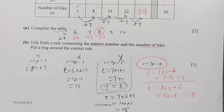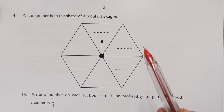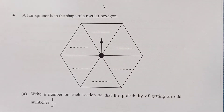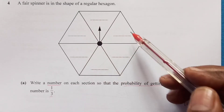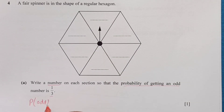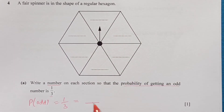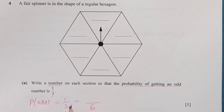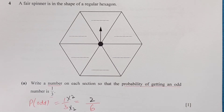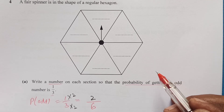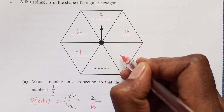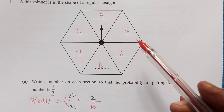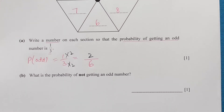Question four: a fair spinner is in the shape of a regular hexagon. Write a number on each section so that the probability of getting an odd number is one-third. We have six sections, so probability of one-third means two out of six sections should have odd numbers. We can put any two odd numbers — for example, five and seven — and fill the remaining four sections with even numbers, such as two, four, six, and eight.